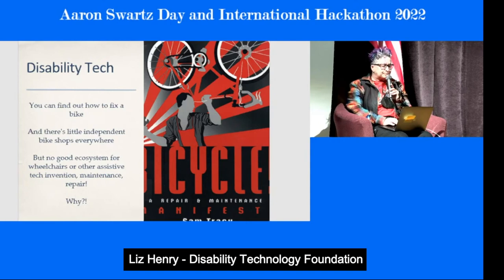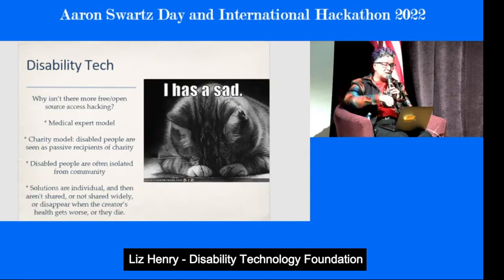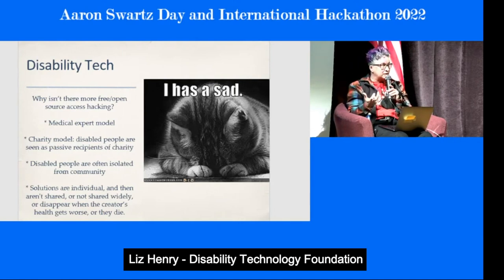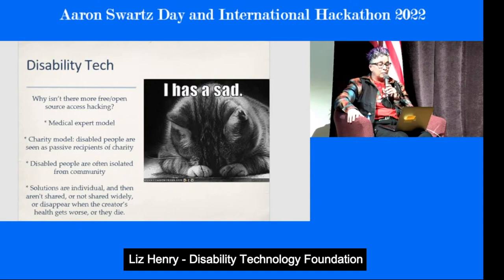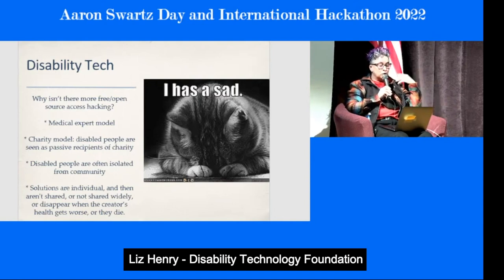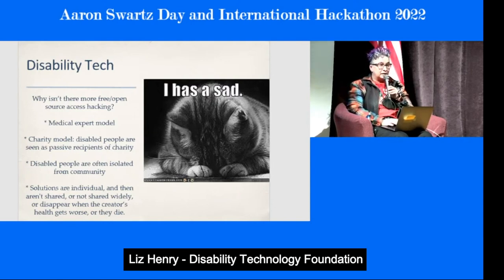I want to talk about why there isn't more free and open source assistive technology hacking, because that's crucial to fixing the situation. People have a model in their minds that it's a thing only medical experts should do. Or they have a charity model where disabled people are passive recipients — you give them a wheelchair and walk away, thinking that's fixed all their problems. Disabled people may be isolated from community, so solutions don't get shared widely. They might go on someone's blog at best, and then disappear when the creator's health gets worse or when they die.